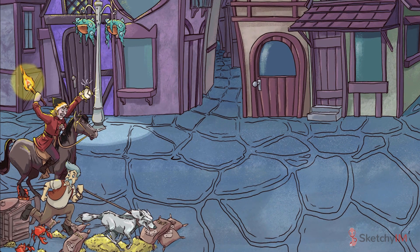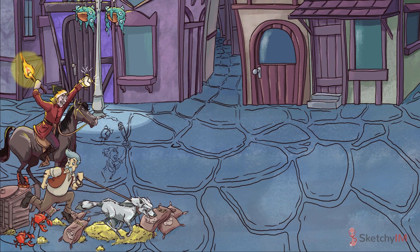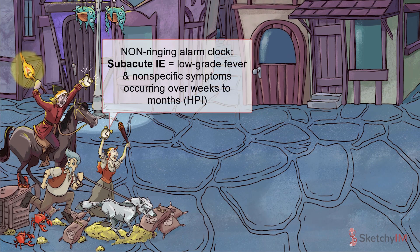Acute IE presents as an acute, rapidly progressive infection, with symptoms like fever, chills, and malaise developing over the course of a few short days. Acute disease is represented by the recurring Sketchy alarm clock, ringing acutely. Subacute IE, on the other hand, is represented by this alarm clock which hasn't gone off just yet. Subacute IE occurs over weeks to months, and consists of low-grade fever and nonspecific symptoms like anorexia, weight loss, and fatigue that seem to smolder forever — just like her slow-burning smoldering torch.